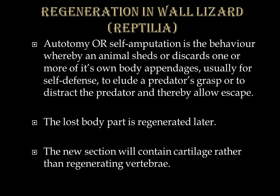In the wall lizard, autotomy or self-amputation is the behavior whereby an animal sheds or discards one or more of its own body appendages, usually for self-defense purposes, to elude a predator's grasp or distract the predator and thereby allow the animal to escape. The lost body part is regenerated later. The new section will contain cartilage rather than regenerating vertebrae.